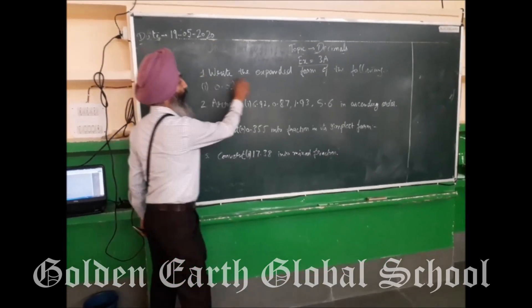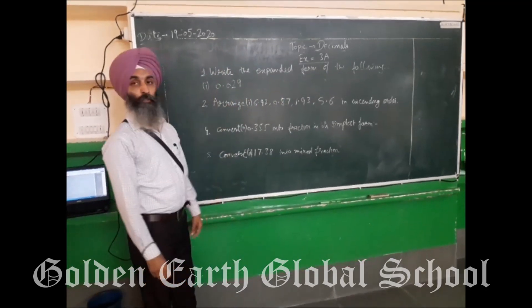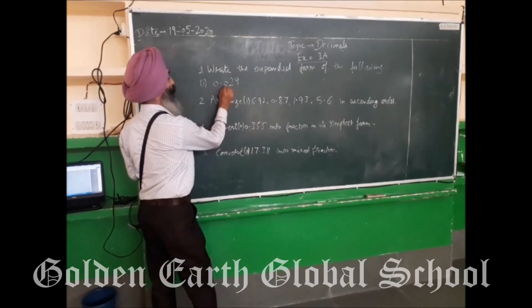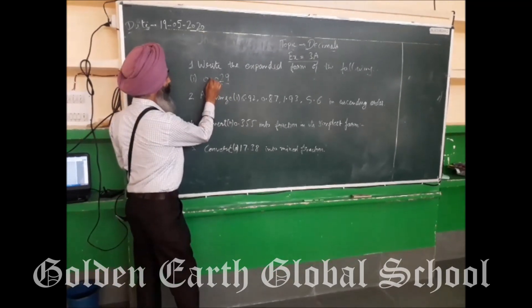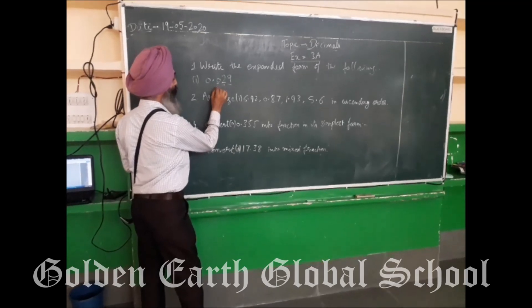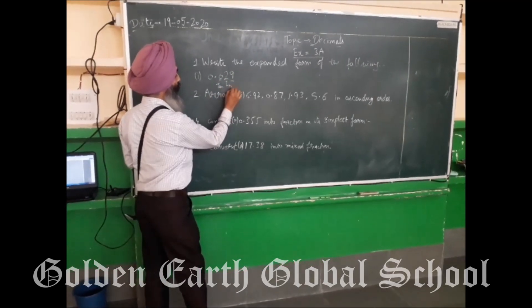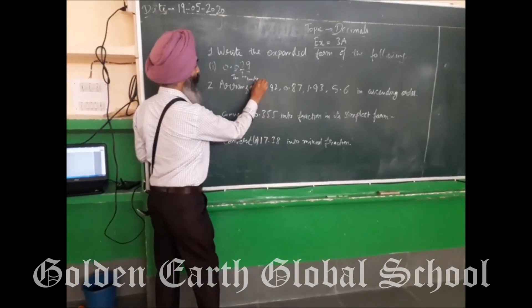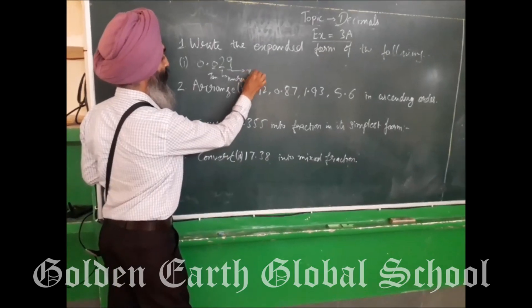Your first question is: write the expanded form. So expanded form means, first of all you must know the place value. After the decimal, this is called the tenths place, and this is called the hundredths place, and this is called the thousandths place.